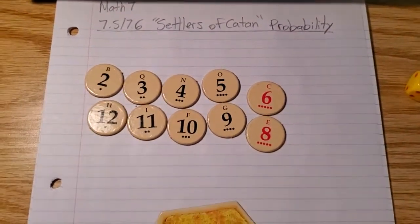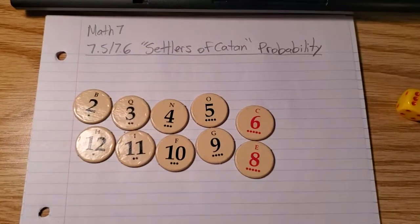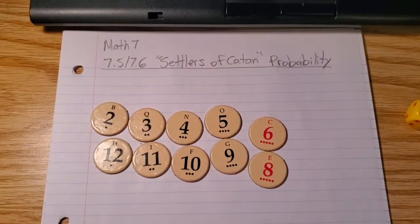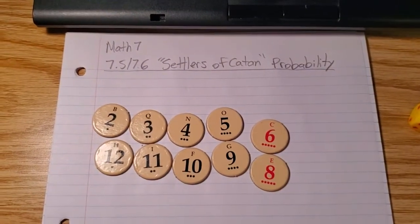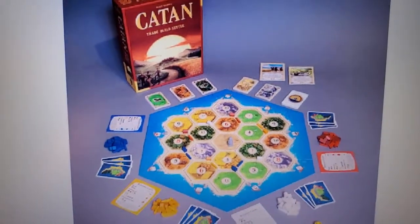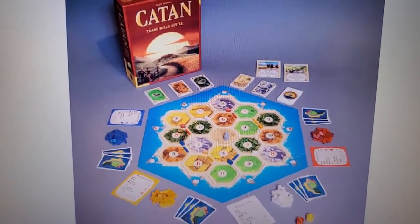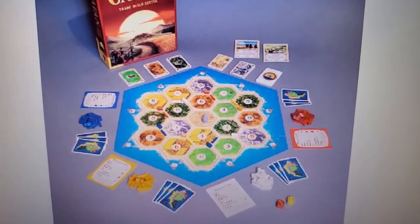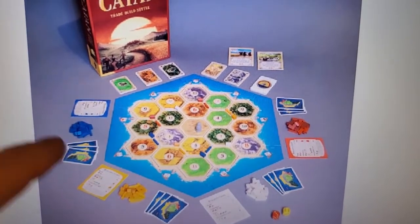I think it's a pretty good game for showing something that we're learning about in math right now and something that you might encounter if you play this game in the future. Settlers of Catan won the Spiel der Jahre, which is the game of the year in German. It's a German award for the best board game around the world, and it won in 1994, and it's still a popular game.